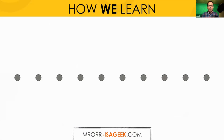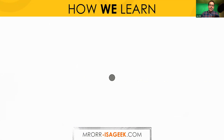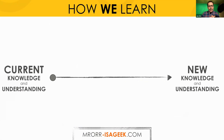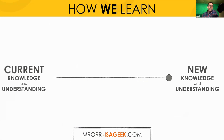I want to start off by talking about how our students learn, and I'll take these dots for example. Each dot represents a student. It'd be great to think that all of those students were at the exact same place in their learning, taking them through this journey — moving from their current knowledge or understanding to new knowledge or understanding.